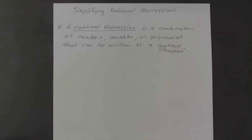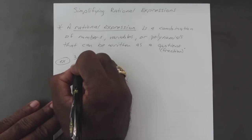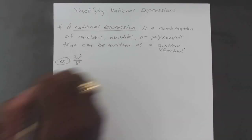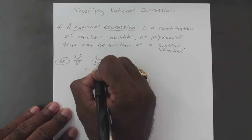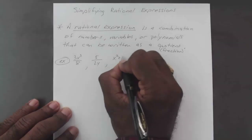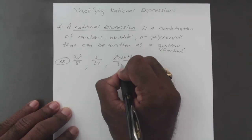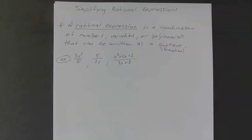For example, if you have 3x³ over 8, or 5 over 2y, or x² plus 2x plus 1 over 3x plus 8, those are all rational expressions where your numerator and denominator can be a combination of anything. It's no longer nice little neat-looking fractions — it can get a bit messy.